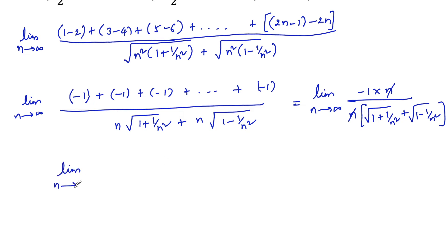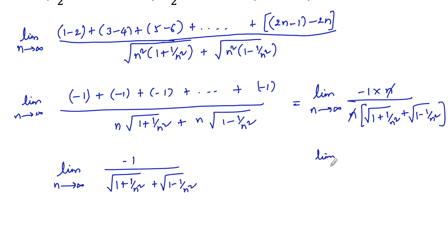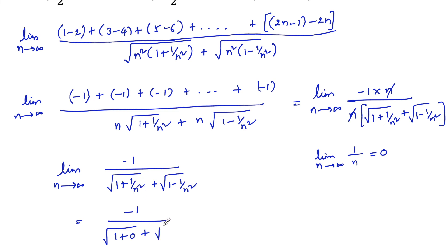We are left with the limit as n tends to infinity of negative 1 divided by (root of (1 plus 1 upon n squared) plus root of (1 minus 1 upon n squared)). Since the limit of 1 upon n (or any power of 1/n) as n tends to infinity is 0, we substitute: negative 1 divided by (root of (1 plus 0) plus root of (1 minus 0)), which equals negative 1 divided by (root 1 plus root 1), that is negative 1 divided by 2.